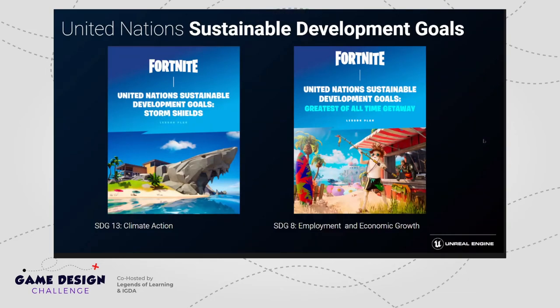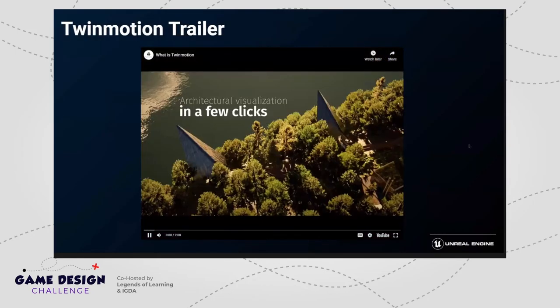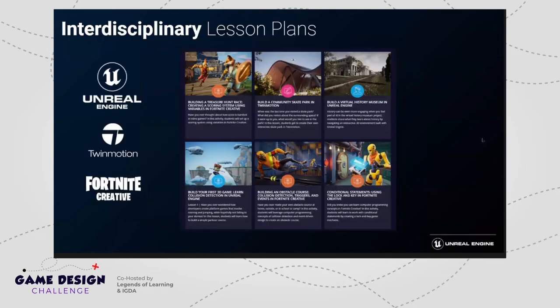We also have some sustainable development goals lesson plans that have just been released, with a few more coming as well. I do want to leave time for Q&A, so I'm going to take you to one of the final slides. Twinmotion is an amazing tool — it's relevant to the game design challenge in that you could use it as a prototyping tool — but I wanted to really focus on what was possible with Fortnite Creative and Unreal Engine.